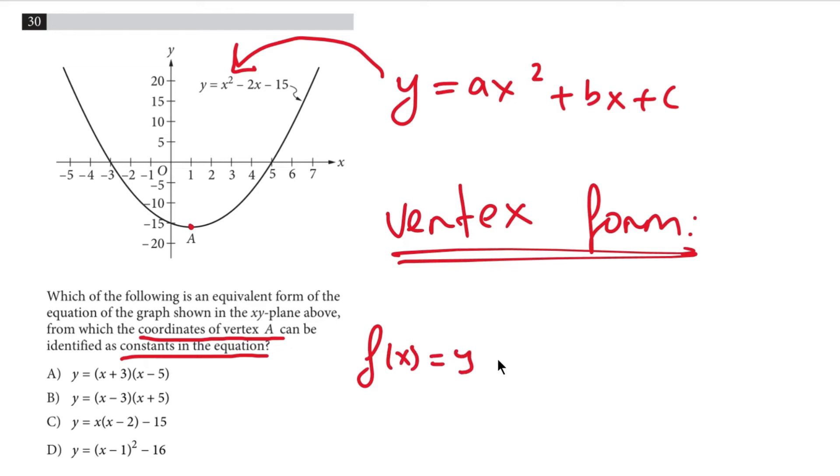f of x or y is equal to a multiplied by x minus h all squared plus k, where h and k are the coordinates of the vertex.